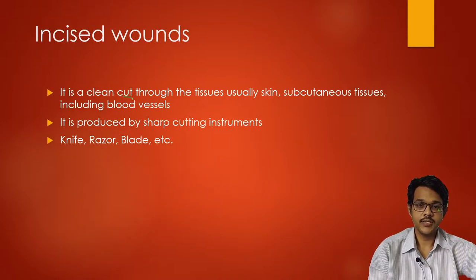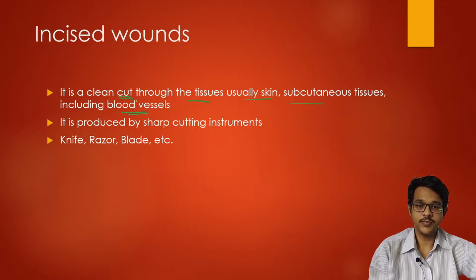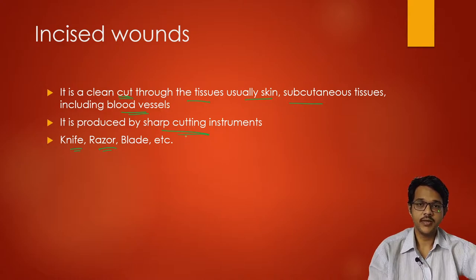An incised wound is a clean cut injury through the tissues, usually skin, subcutaneous tissue including the blood vessels. It is produced by any sharp cutting instruments like knife, razors, blade, or any weapon which has a sharp edge.